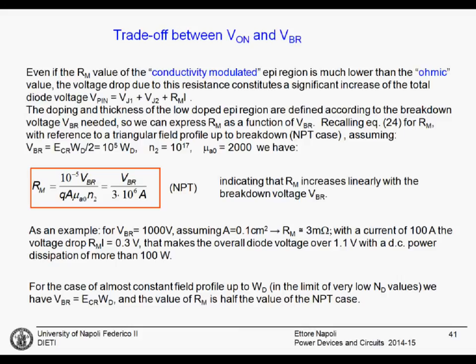For the full punch-through design, the thickness of the lightly doped region would be halved and the resistance would be reduced. It is therefore always advantageous to use a punch-through design. Additionally, higher doping in the epilayer is always better to reduce resistance, even though the doping does not appear explicitly in the simplified Rm equation — it determines how easily conductivity modulation is achieved.